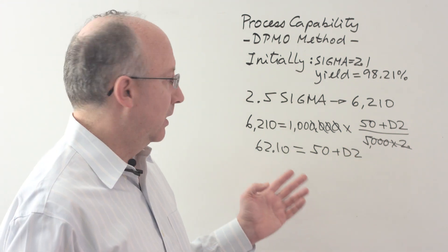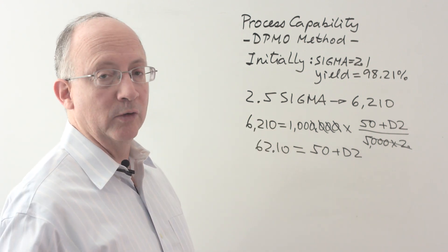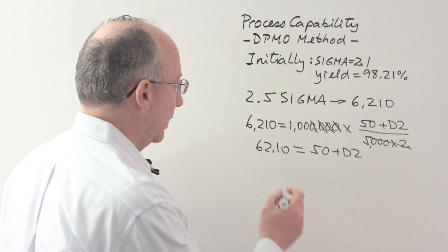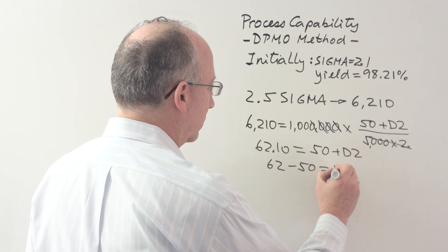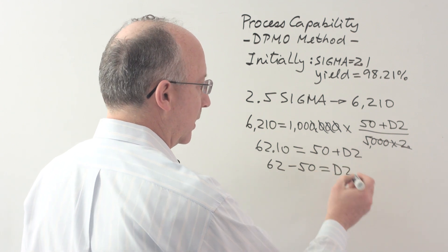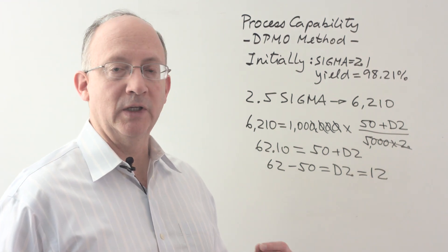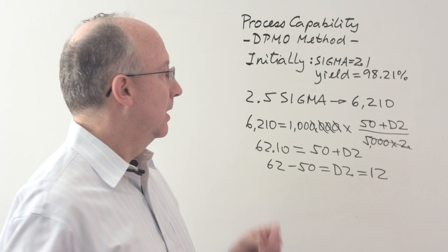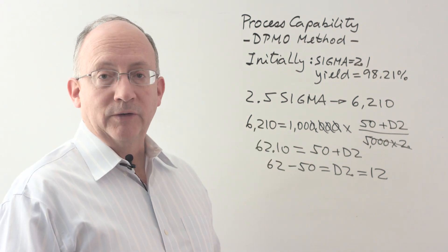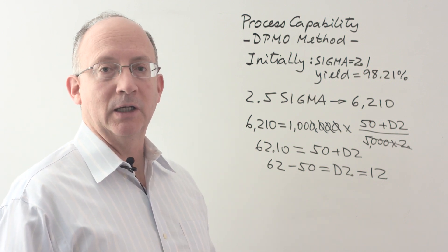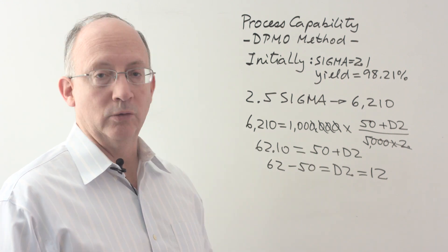Clearly, we cannot have a number of defects with a fraction, and we need to be conservative, so that we stay within the 2.5 sigma target. Therefore, what we're saying is that 62 minus 50 has to be equal to the number of defects that we can afford to have, and this would be equal to 12. So, 12 is the maximum number of incomplete orders that we may have if our target is to reach a capability value of 2.5 sigma. That would then become a target, again, to be included in the description of our project, and a goal to work towards.